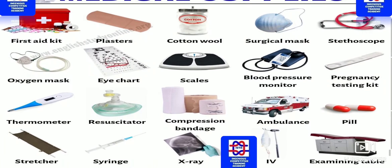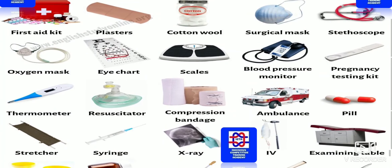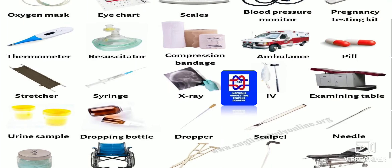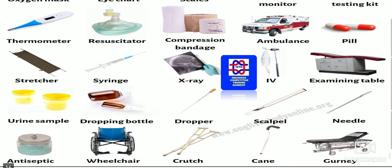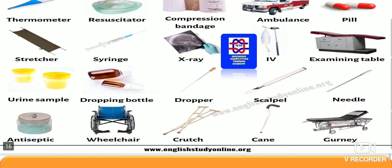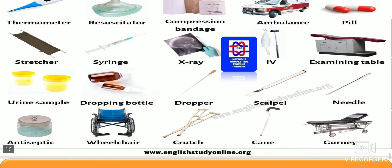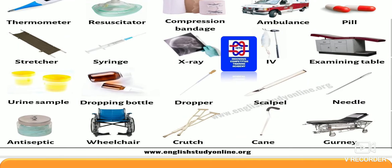Medical supplies — as you can see what has been given: first aid kit, plasters, cotton wool, surgical mask, stethoscope, oxygen mask, eye chart, scales, blood pressure monitor, pregnancy testing kit, thermometer, resuscitator, compression bandage, ambulance, pill, stretcher, syringe, X-ray, IV, and examining table.